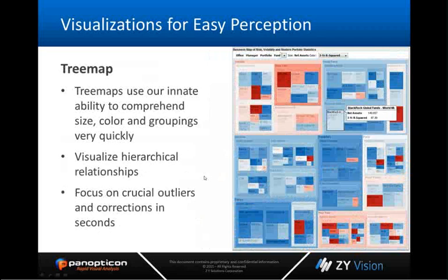One way it does this is through tree maps. Tree maps use size, color, and groupings to very quickly derive information. Looking at the tree map on the right, your eye very quickly focuses on those crucial outliers based upon color, shape, and size. You can quickly see an area in London that's pink, and an even darker pink and dark red area — that dark red is what's making London fall outside the norm. Through this visual encoding you can see hierarchical relationships and quickly comprehend the data.